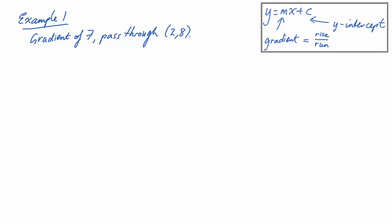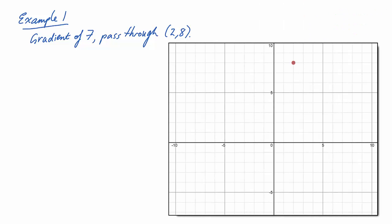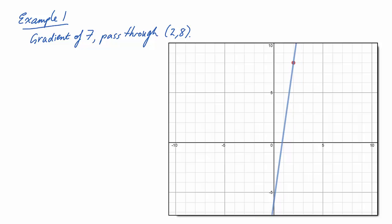Let's have a look at a little picture of what we're really trying to do here. We've been given the point (2, 8) and we want to have a line of gradient 7. So let's put a line that has a gradient of 7 down, and what we can do is change that line by moving it up or potentially down until it passes through that point. So we want something like this as our final answer. Let's now try and do that using some algebra.